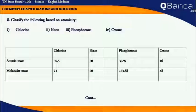Classifying the following based on atomicity: Chlorine, Neon, Phosphorus, Ozone.